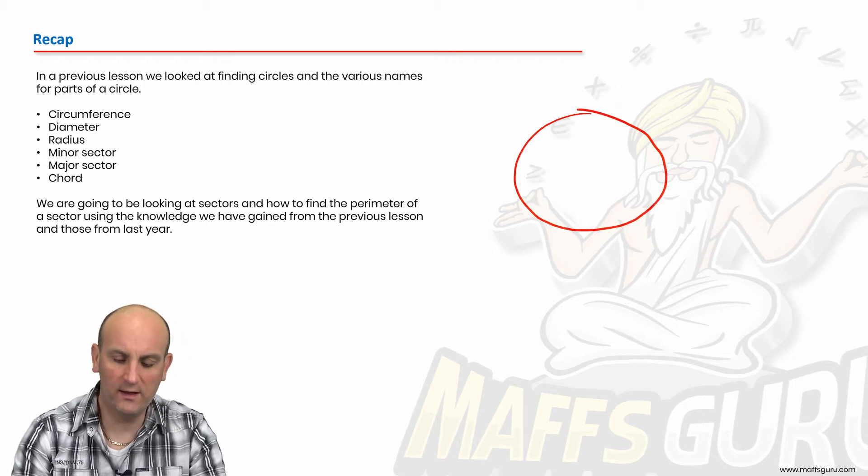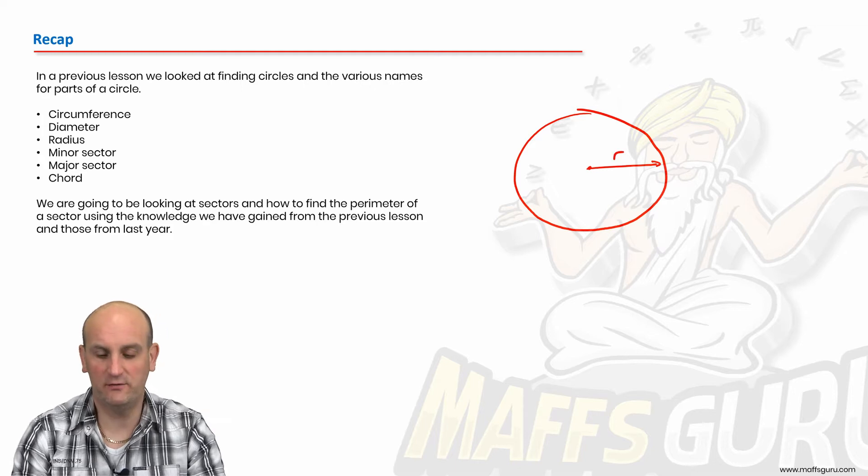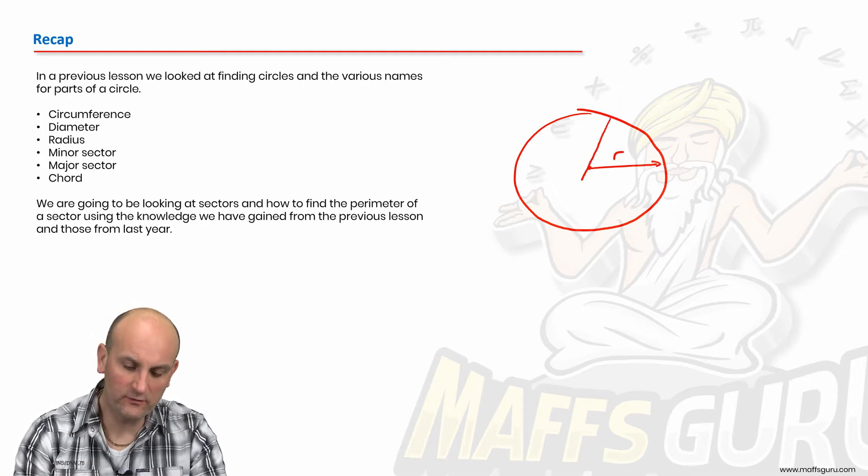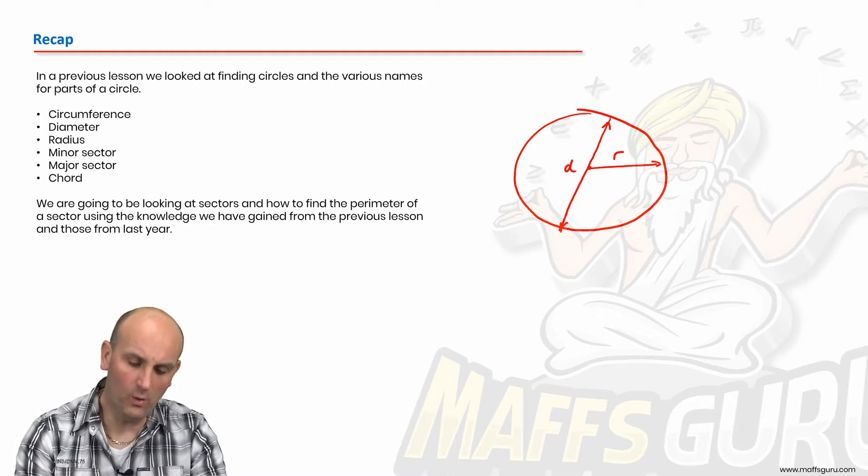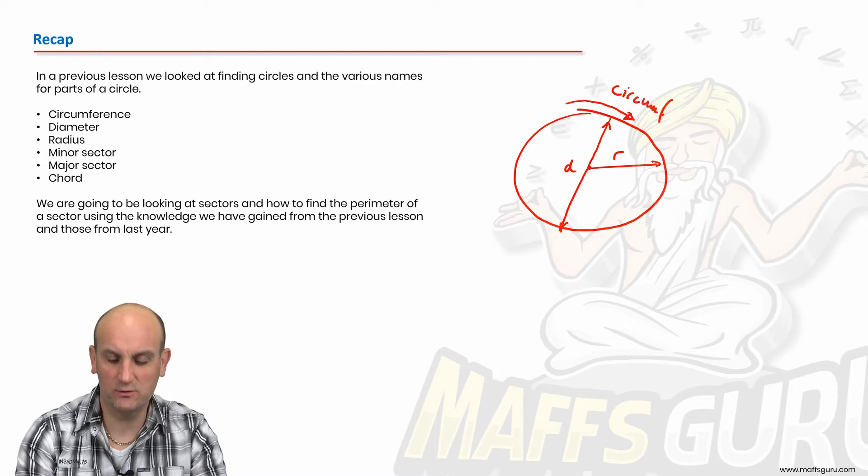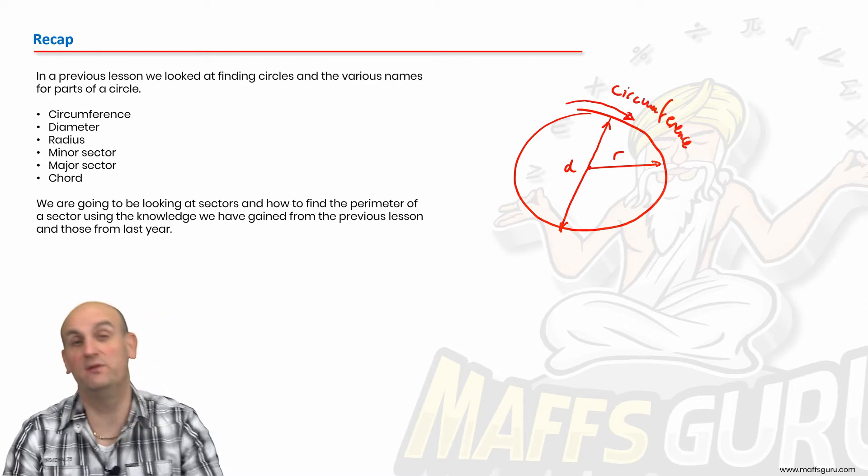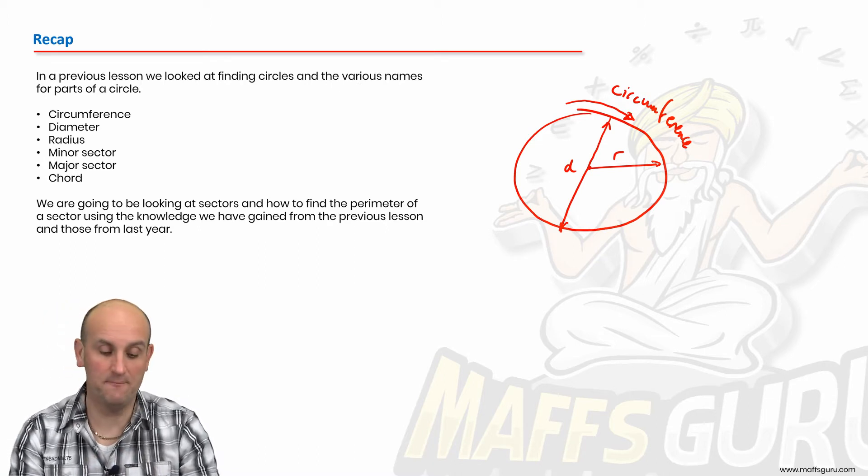So if we have a circle, hopefully we are aware that the distance from one side of the circle to the other, also passing through the center, is my diameter. All the way around the edge is called the circumference, which is also the perimeter, which is a previous video I've just recorded for my channel, and my website.